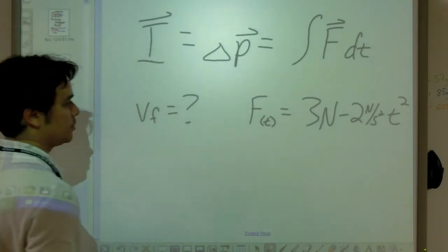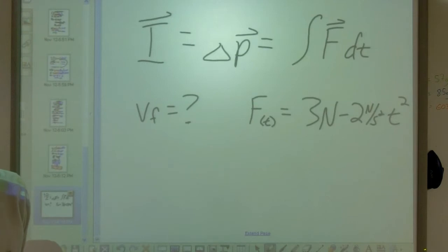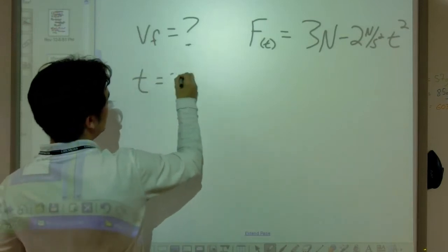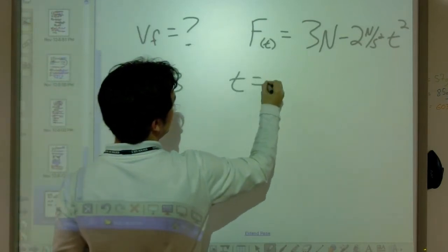Three newtons minus two newton per second squared times t squared. That is the function that describes the force that I'm applying. So over time, that force changes. I'm also going to tell you that I want to know what happens in a period from t equals three to t equals four.